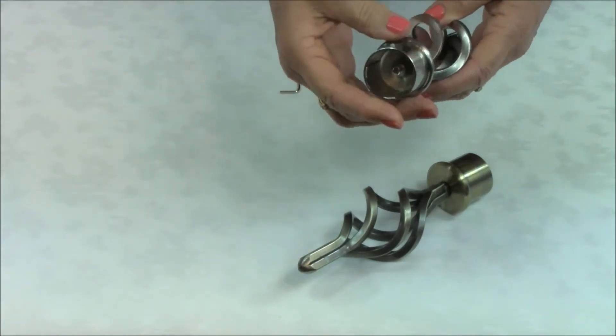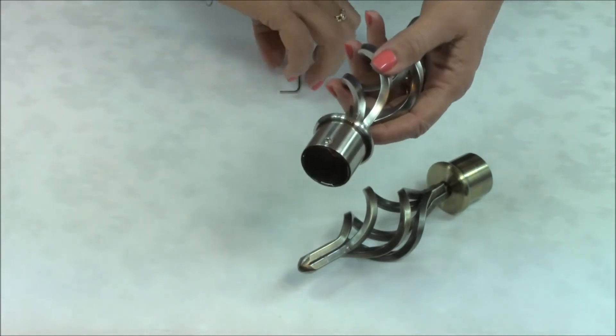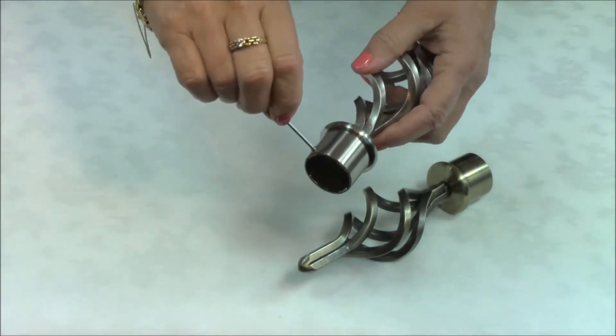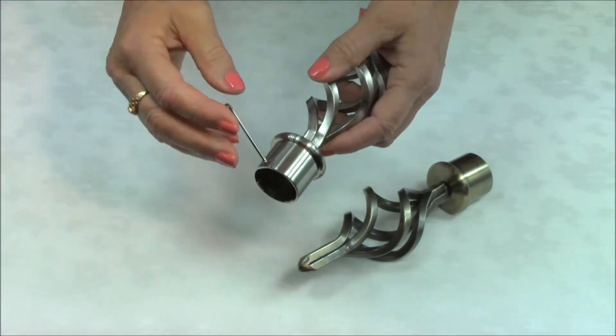The finial is attached to the curtain pole with a grub screw and the grub screw is tightened with an allen key that is also supplied with the finial.